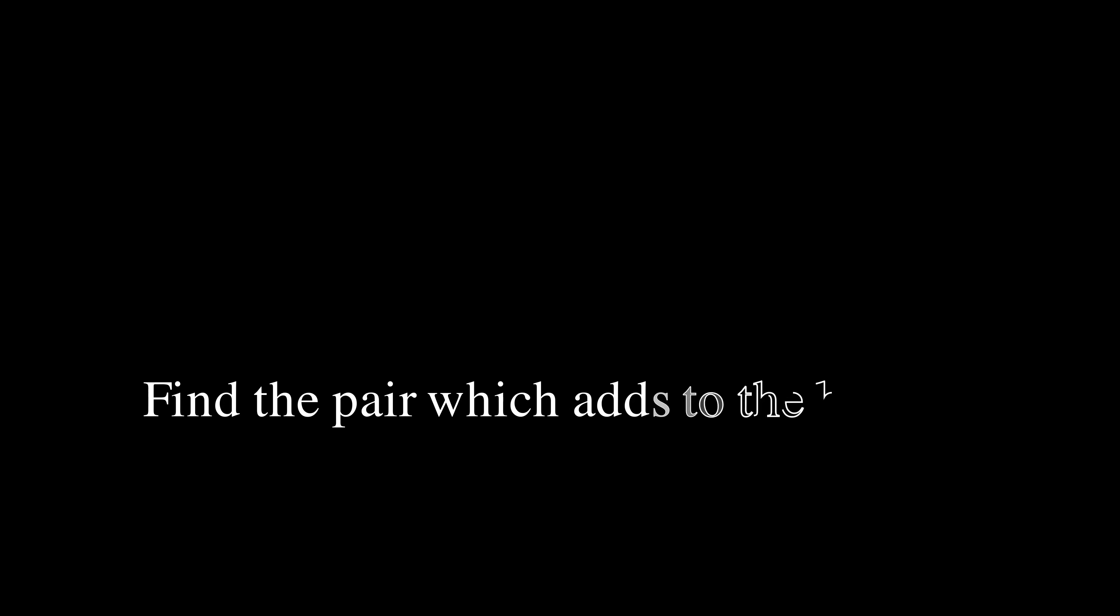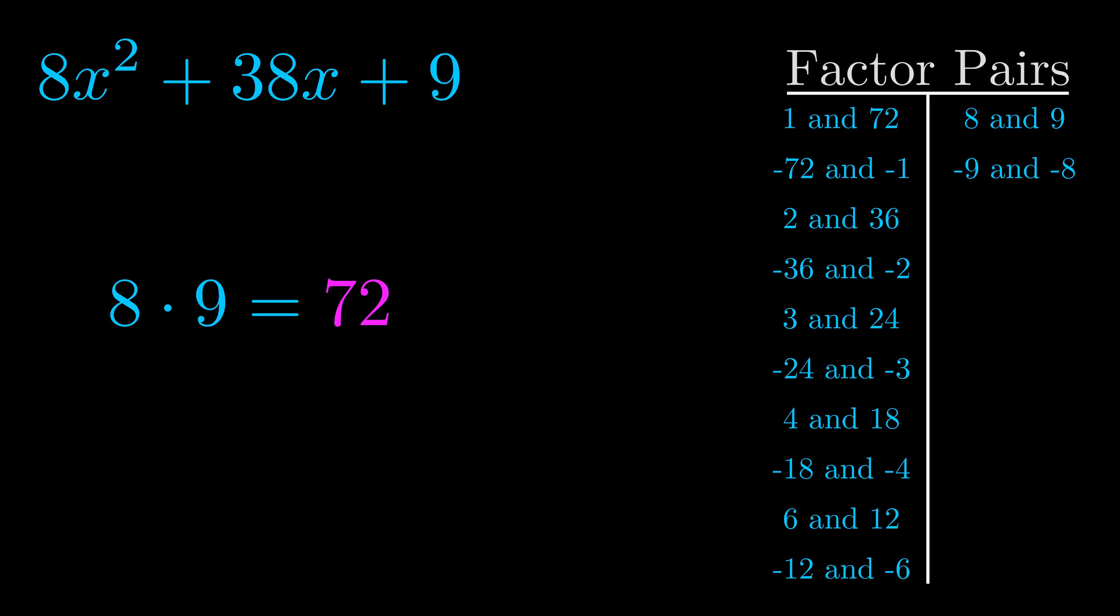The b value is the coefficient on the x term. That's the middle term, the one that we haven't done anything with yet. And really this is the only factor pair that we need.